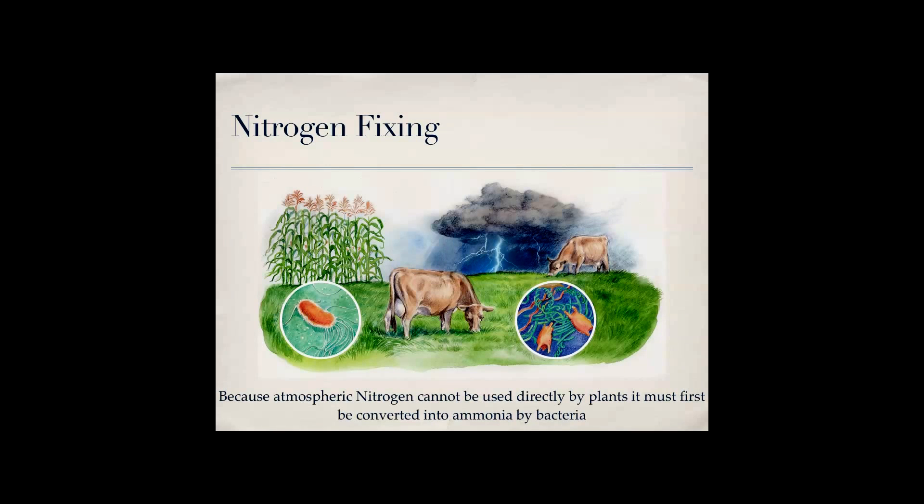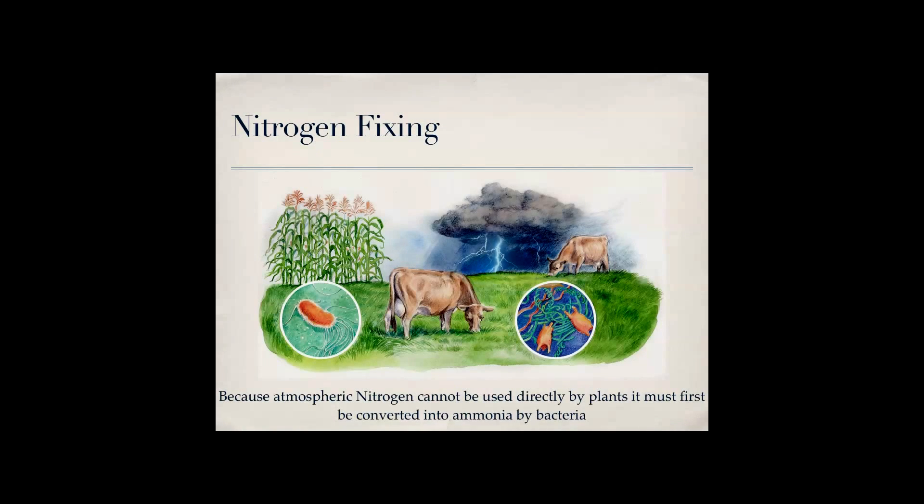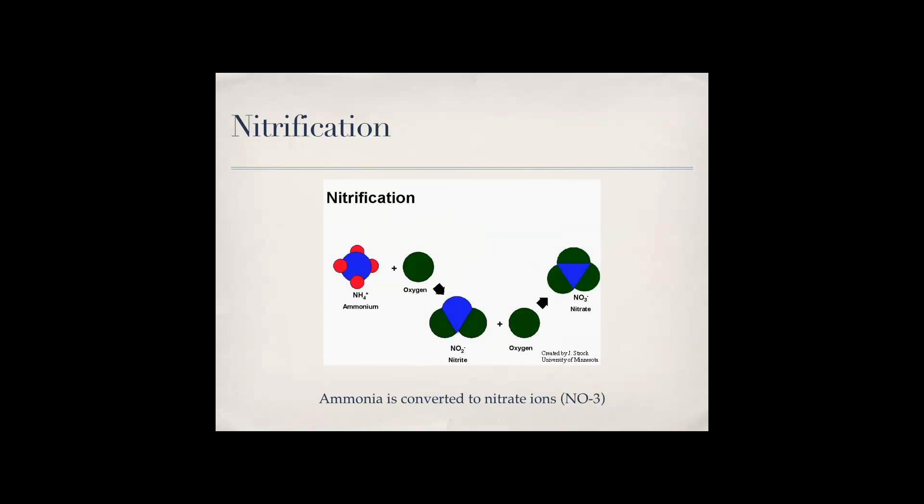Nitrogen fixing is when, okay so nitrogen in the air cannot be used directly by plants, so bacteria basically take the nitrogen in the air and they make it into ammonia so that the plants can actually use it. Ammonification is when decomposers convert organic waste into ammonia for plant use. So the difference is bacteria converts nitrogen into ammonia, but decomposers convert organic waste, which is like poop from cows, into ammonia.